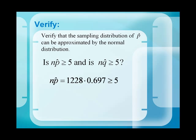So, n times p-hat is 1,228 times 0.697, which is, indeed, more than 5, and n times q-hat is 1,228 times 0.303, which is also more than 5.